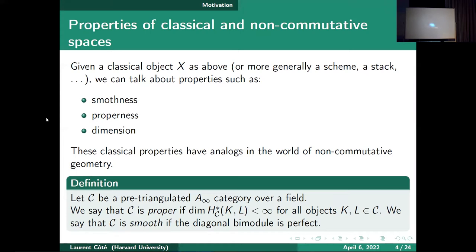Here's the definition. Let C be a dg category over a field. We say it's proper if the cohomology of the Hom spaces is finite-dimensional. We say it's smooth if the diagonal bimodule is perfect — meaning you can resolve it by representable tensor products.